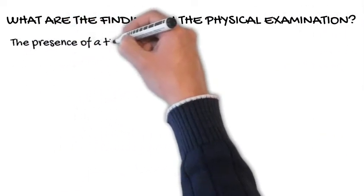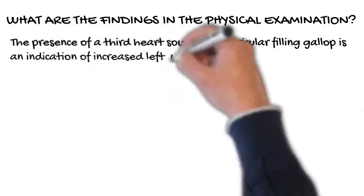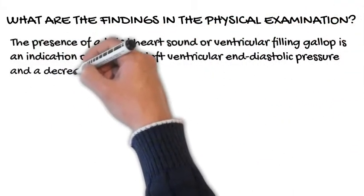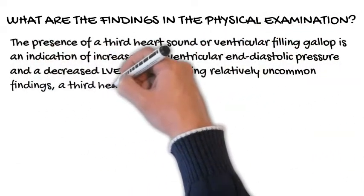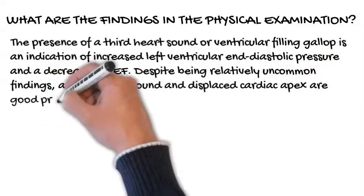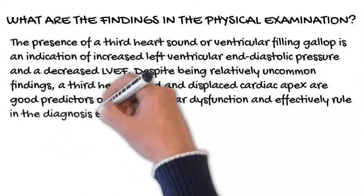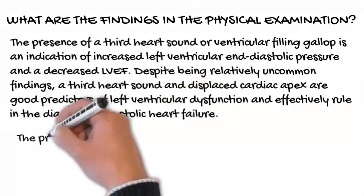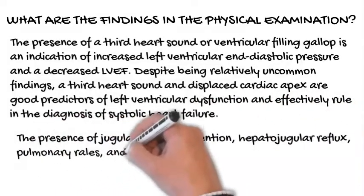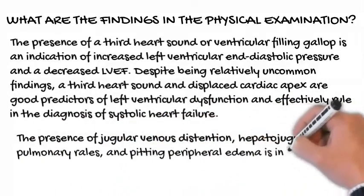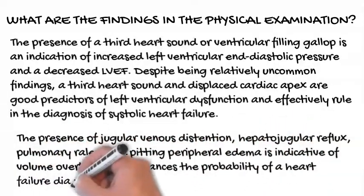What are the findings in the physical examination? The presence of a third heart sound or ventricular filling gallop is an indication of increased left ventricular end diastolic pressure and a decreased LVEF. Despite being relatively uncommon findings, a third heart sound and displaced cardiac apex are good predictors of left ventricular dysfunction and effectively rule in the diagnosis of systolic heart failure. The presence of jugular venous distension, hepatojugular reflux, pulmonary rales, and pitting peripheral edema is indicative of volume overload and enhances the probability of a heart failure diagnosis.